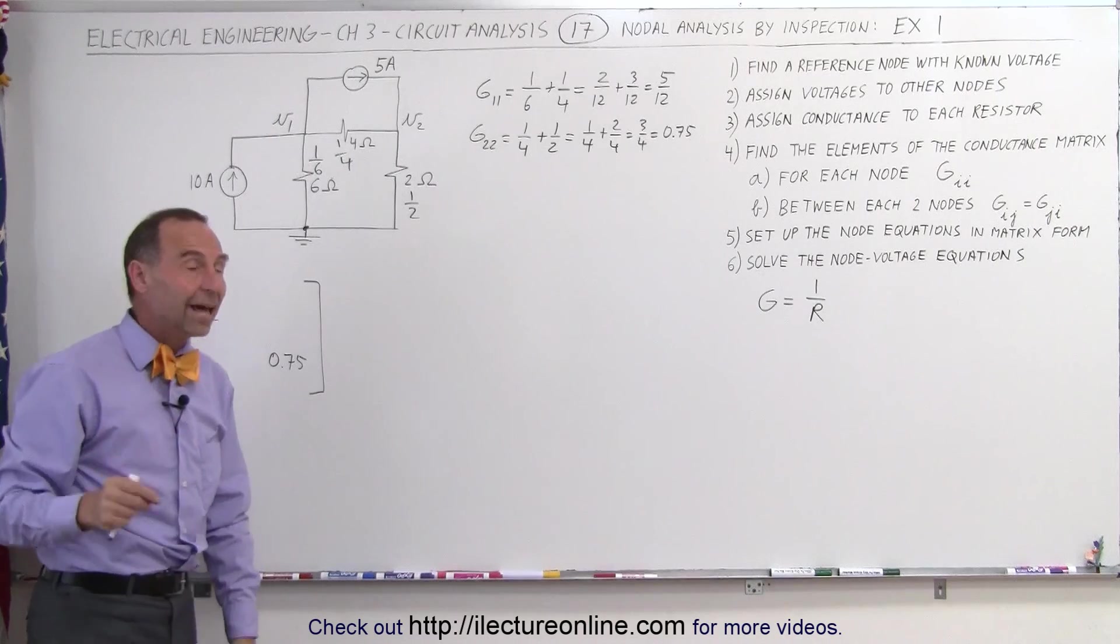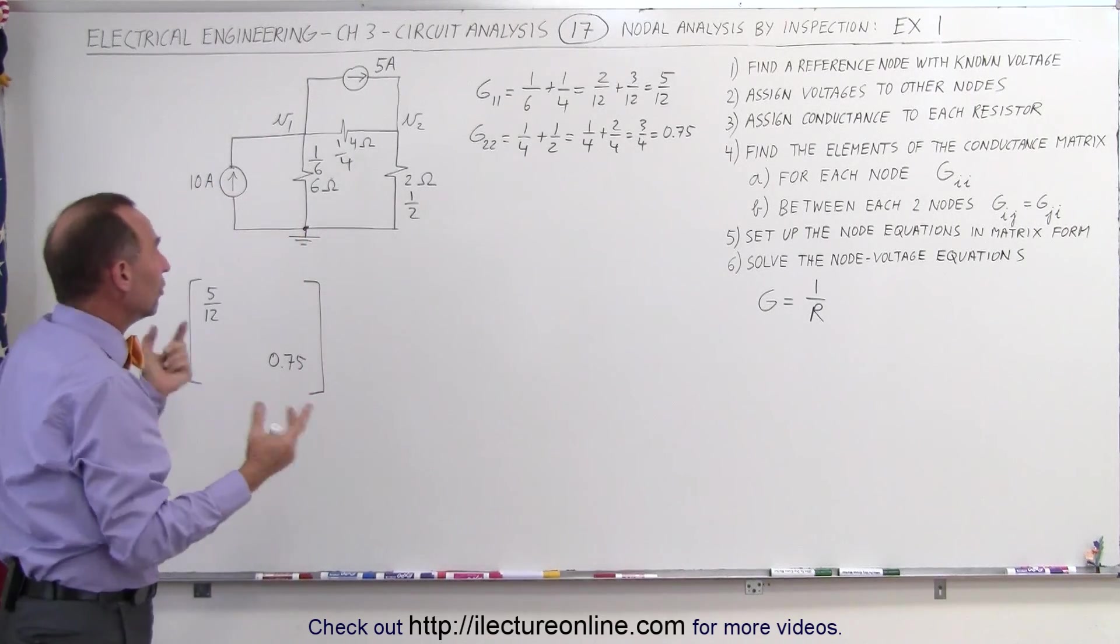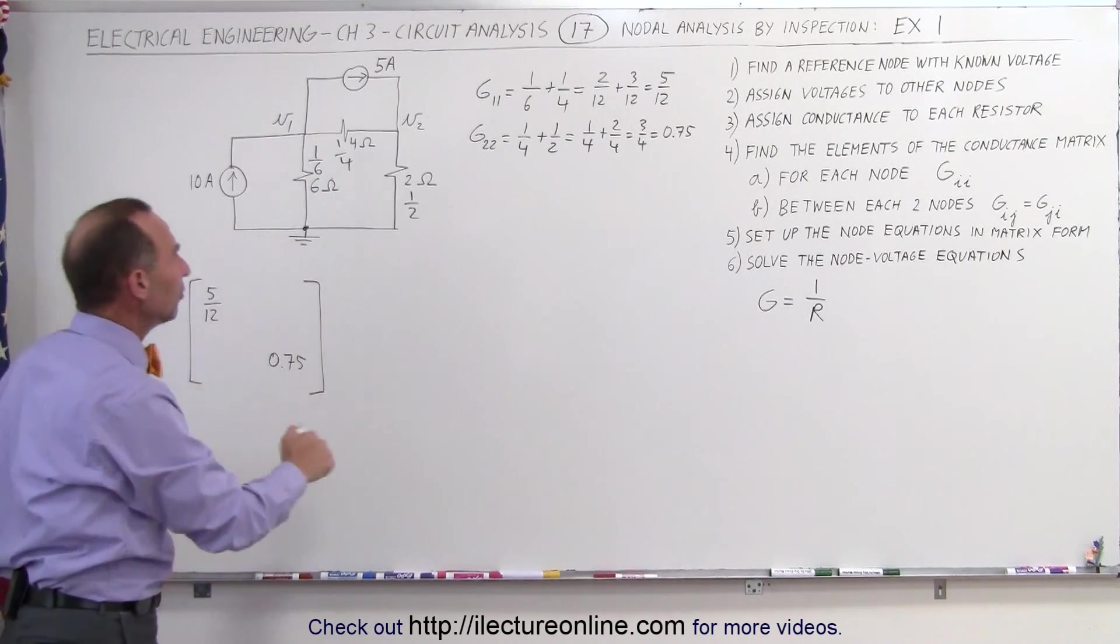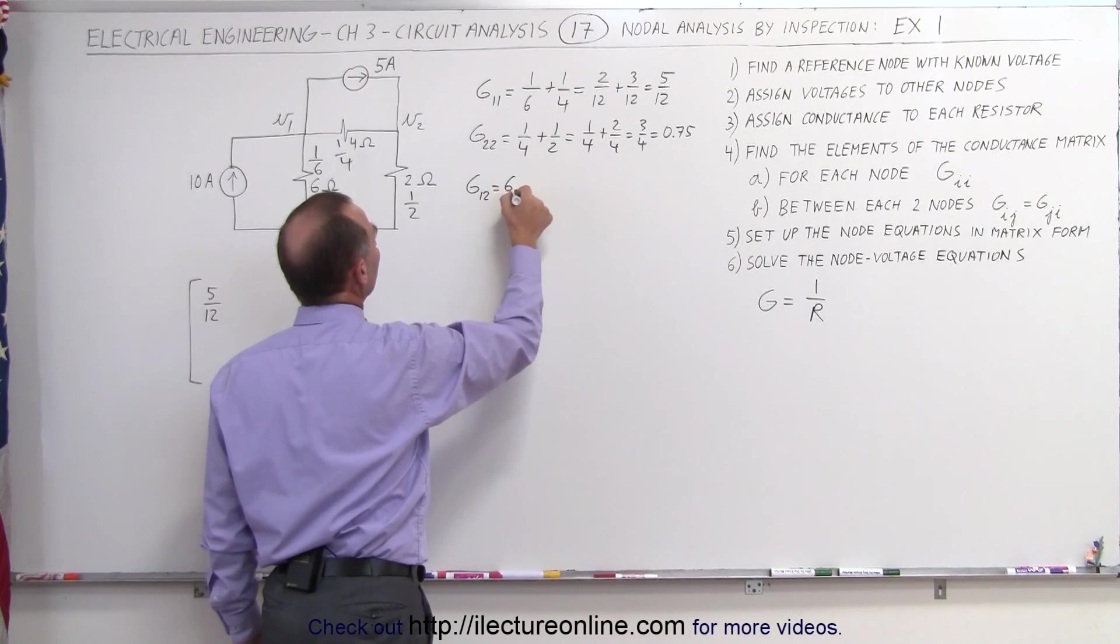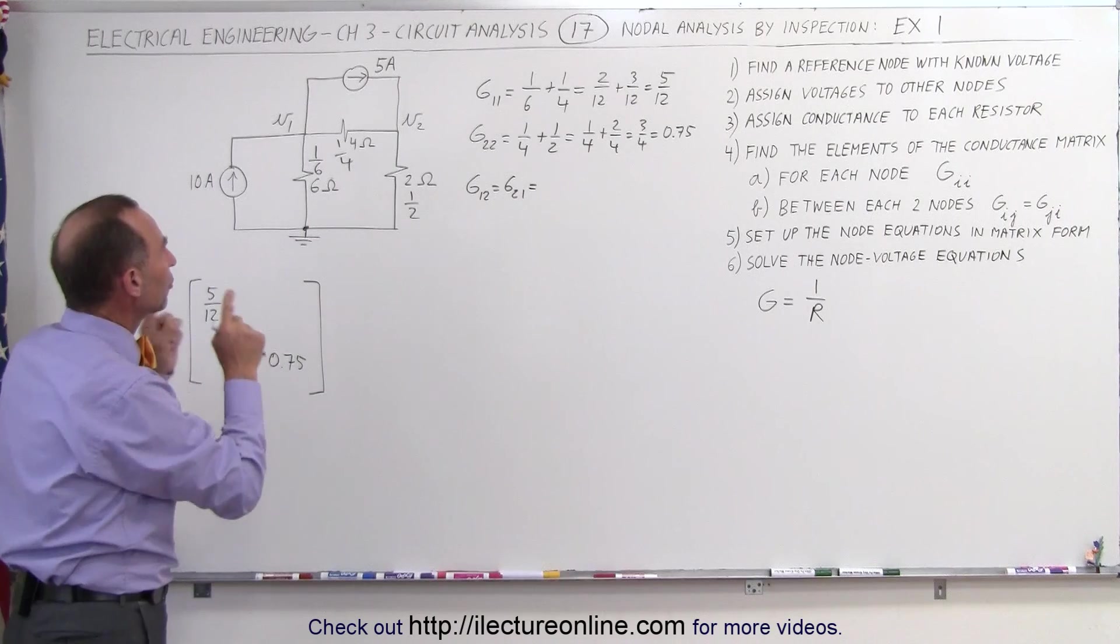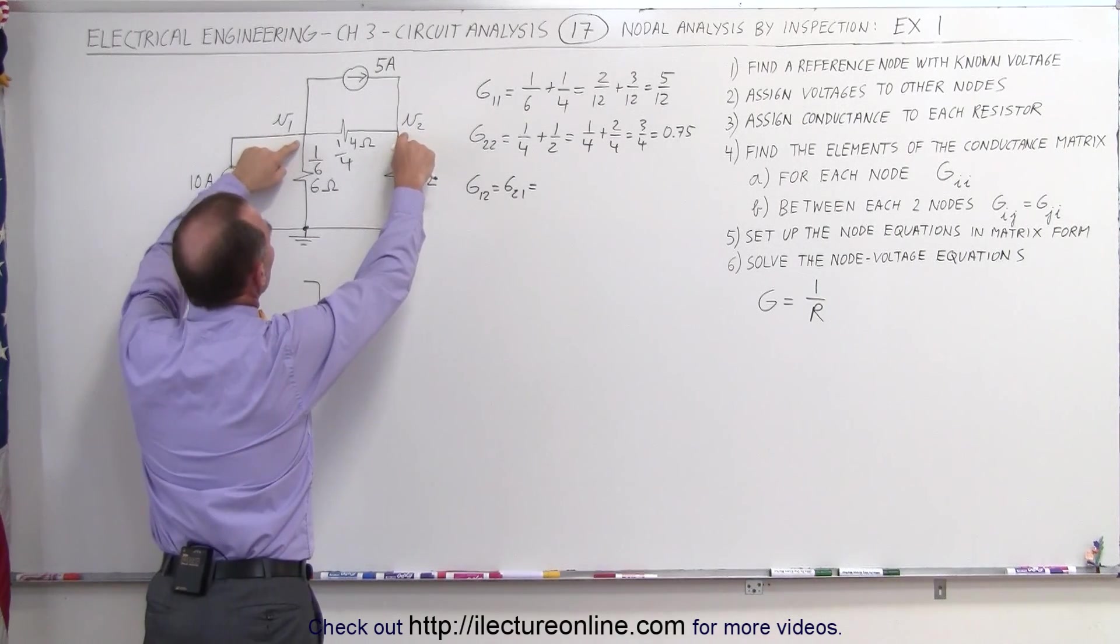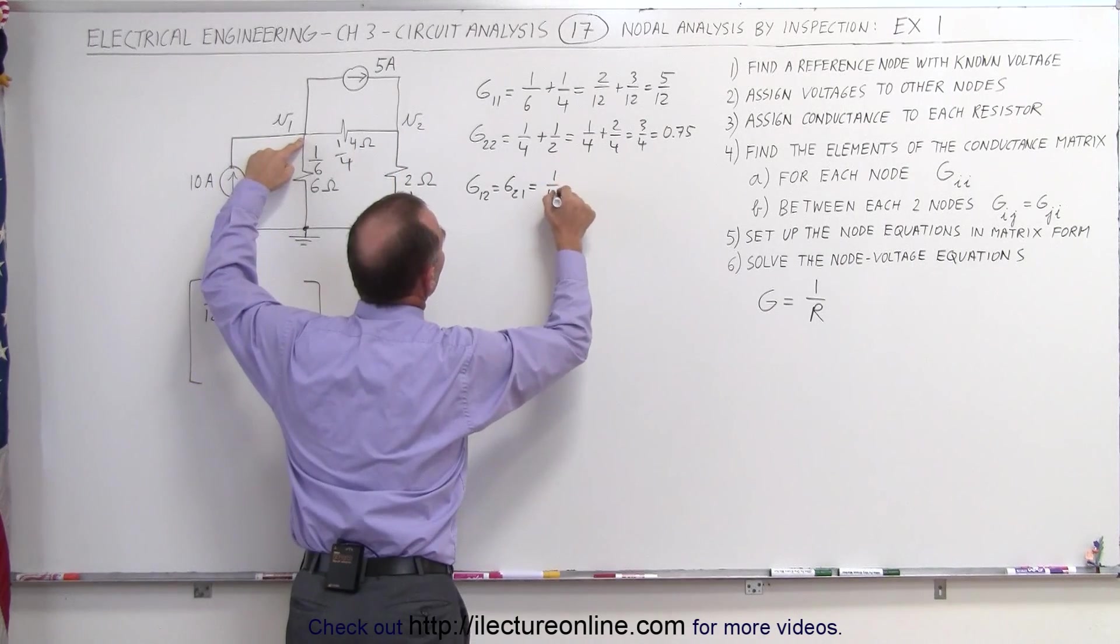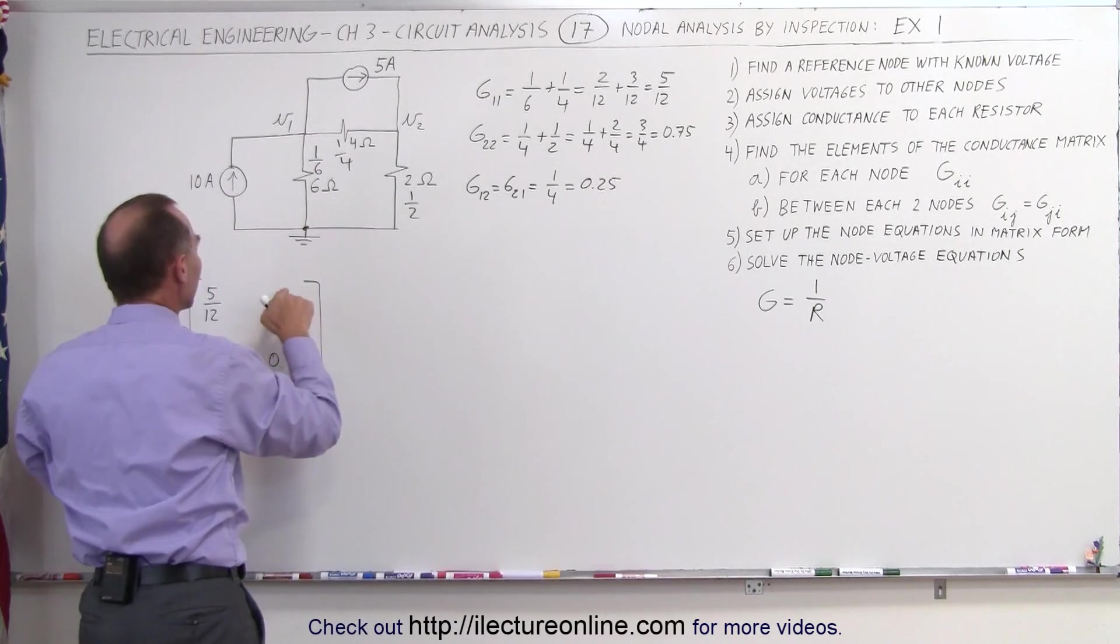Along the diagonal, we simply add up all the conductances connected to all of the nodes. In this case, there's just two nodes, so we have two diagonal elements. In the cross diagonals, we get G12 equals G21, which is equal to, here we find the conductance that connects the two nodes. In this case, the conductance between node 1 and node 2 is 1/4. That gives us 1/4, which is equal to 0.25, and that goes into the cross elements.